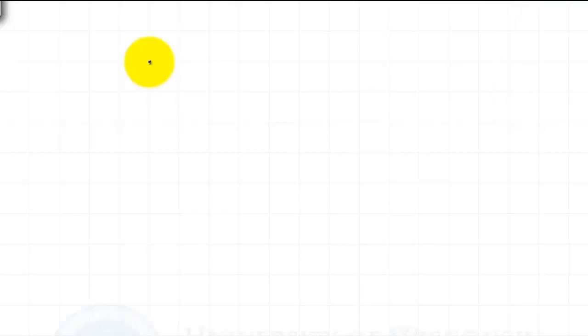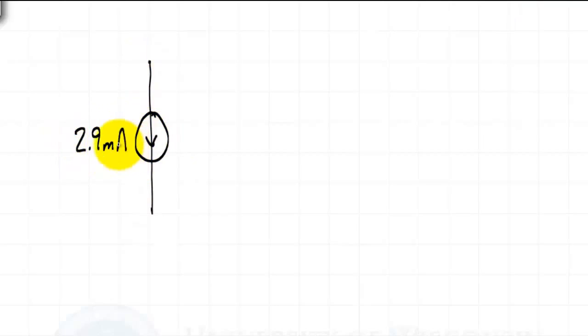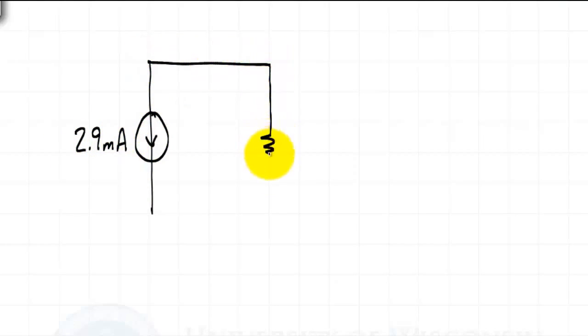In the circuits we dealt with in the last video, we dealt directly with currents only. Quite often, we have voltage sources in the circuit, and at this point we do not necessarily know how to deal with that. Take the following circuit for example. We have a 2.9 milliamp source in parallel with a 4 kilohm resistor, another 5 kilohm resistor, and we'll end up with a 28 volt source.